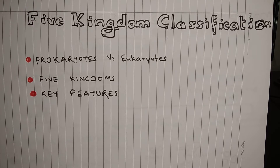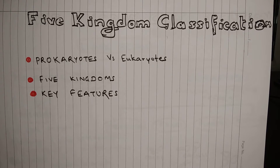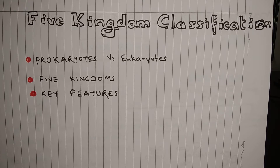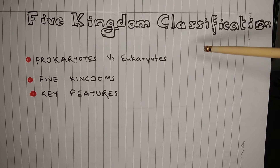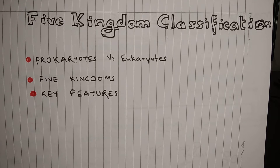Hi, this is Ajay Anand and welcome to science classes from ExcelUp.com. In this lesson, you will learn about the Five Kingdom Classification of Living Beings. This lesson has been taken from Biology of Class 11th. You will learn about the difference between prokaryotes and eukaryotes, then some key features of the Five Kingdoms and a couple of examples of living beings from each kingdom.